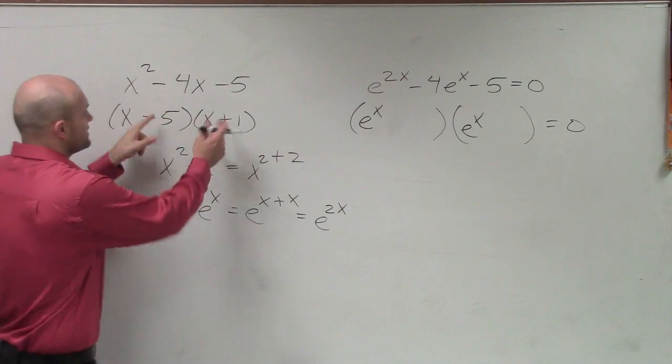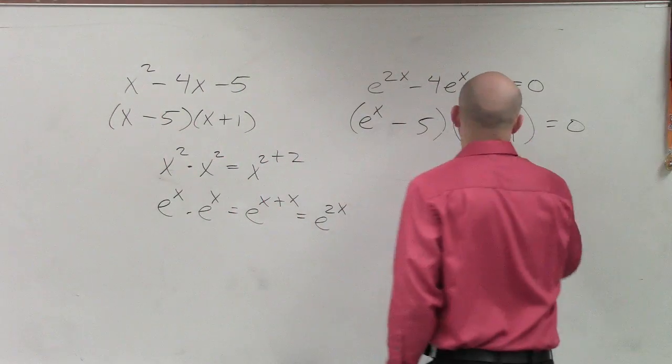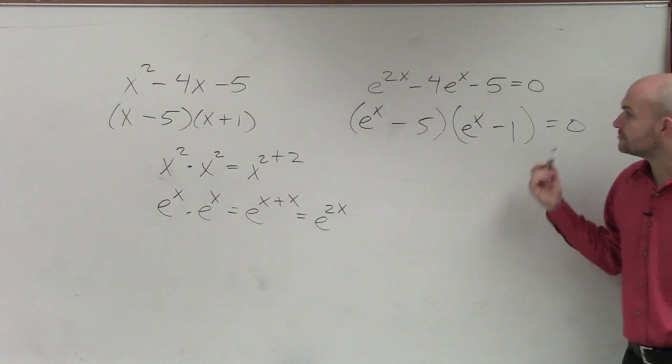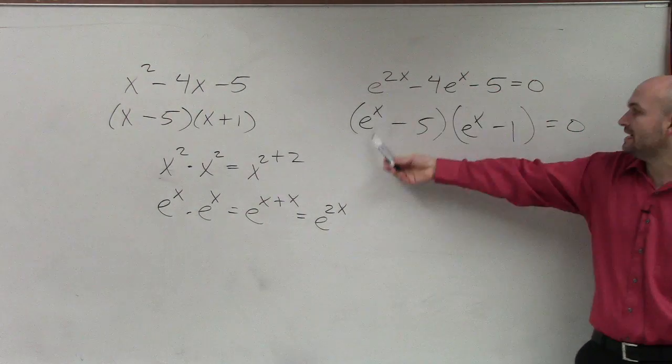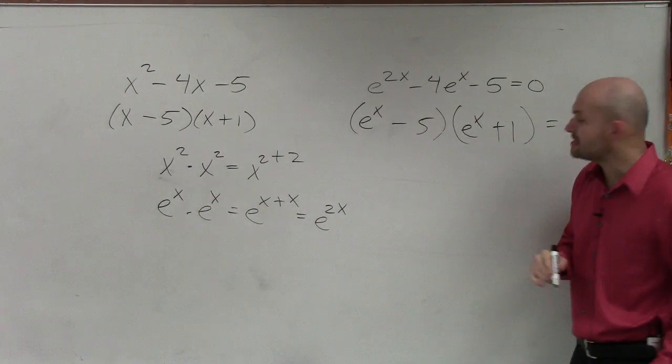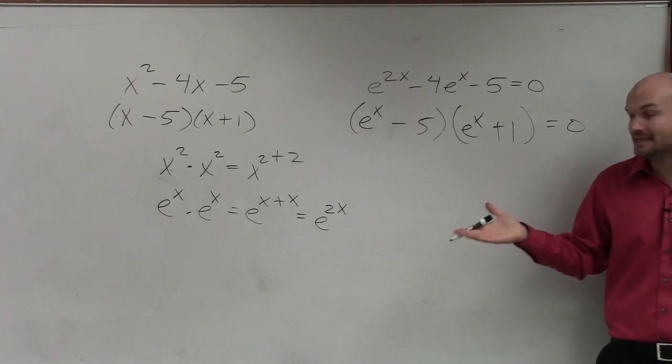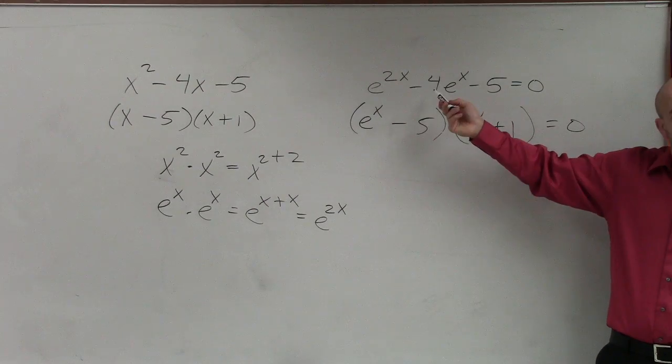So therefore, then I can just use these minus 5 minus 1. And if you guys were to multiply these, e to the x times negative 5 is negative 5e to the x. e to the x, oh, that's plus 1, right? e to the x times plus 1 is going to be plus e to the x. Add them up, you get negative 4e to the x.